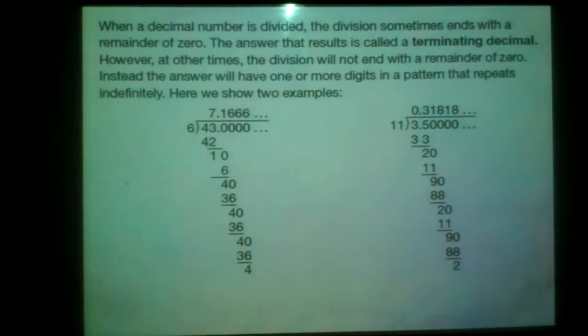It says when a decimal number is divided, the division sometimes ends with the remainder of zero. The answer that results is called the terminating decimal. So a terminating decimal is basically when you get a decimal number that ends or if you get a whole number. So 1.5, that's a terminating decimal. 2.0 would be a terminating decimal. However, at other times the division will not end with a remainder of zero.